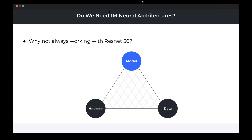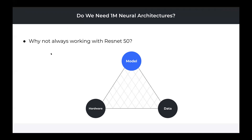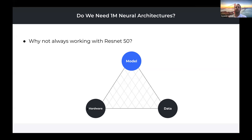Hardware also enters the picture when we want to select a model that is efficient on a specific hardware. This brings us to a triangle that we need to optimize across all dimensions — but usually the data and hardware are given, and we need to select the neural architecture to solve everything.